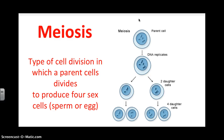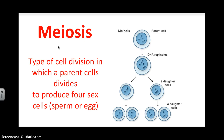Meiosis, however, produces four cells, and they're all different from each other if you compare them back to the original cell. We've been learning about Punnett squares, and this kind of ties together fertilization with Punnett squares, and why we use Punnett squares for genetics, and what it has to do with sperm and eggs and fertilization.